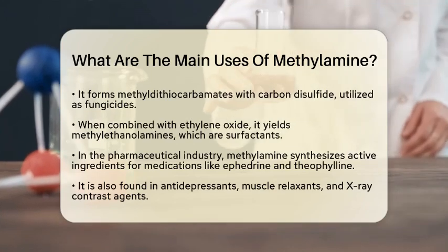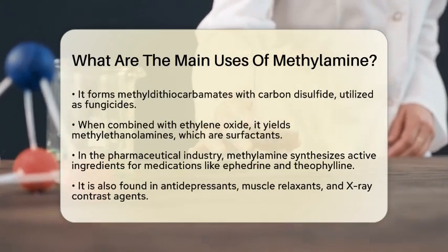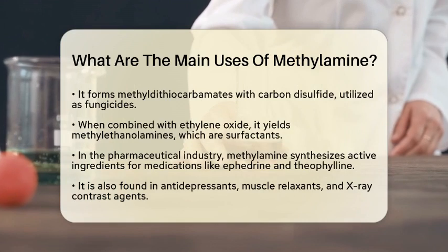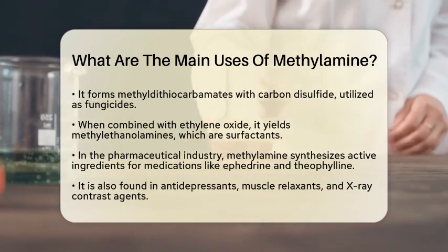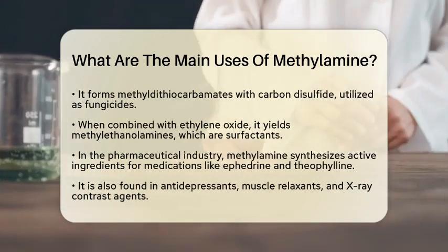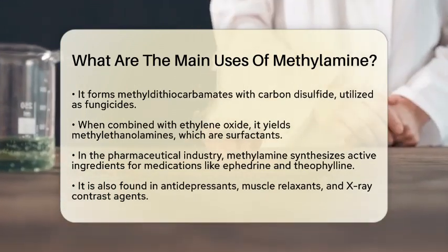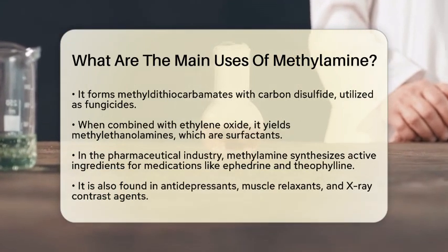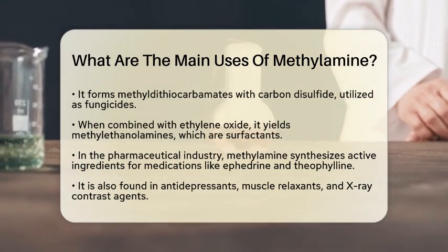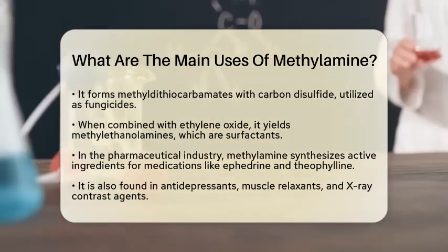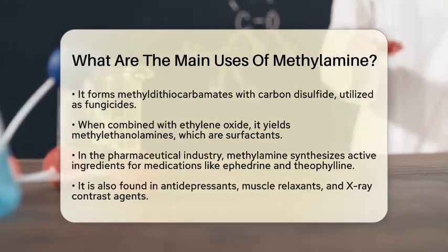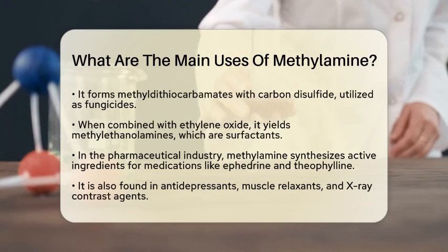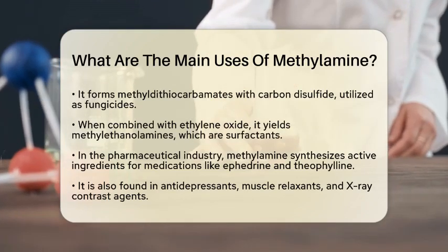Agriculture benefits from methylamine as well. It serves as a precursor for carbamate insecticides, such as carbaryl and carbofuran, and is used in herbicides. Its derivatives also function as fungicides and growth regulators, helping to protect crops.